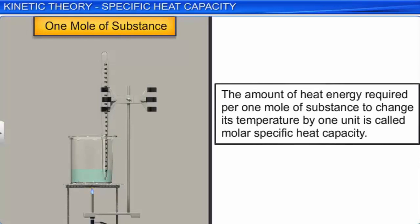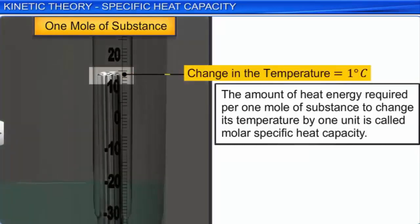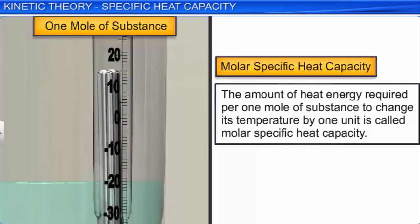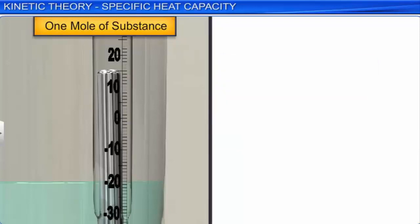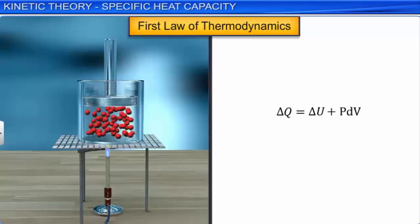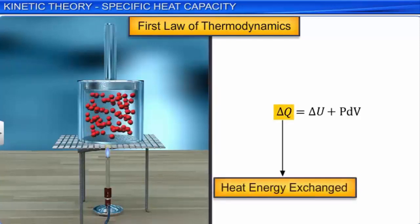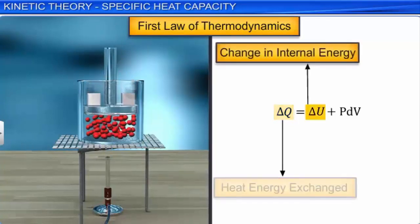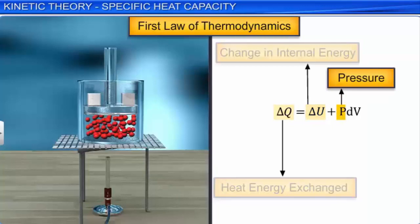According to the first law of thermodynamics, ΔQ = ΔU + PdV, where ΔQ is the heat energy exchanged, ΔU is the change in internal energy, P is the pressure, and dV is the change in volume. The molar specific heat capacity at constant volume Cv = (1/n)(dQ/dT)|v. When the volume is constant, the work done PdV = 0, and the heat energy exchanged equals the change in the internal energy. Then Cv = (1/n)(dU/dT).